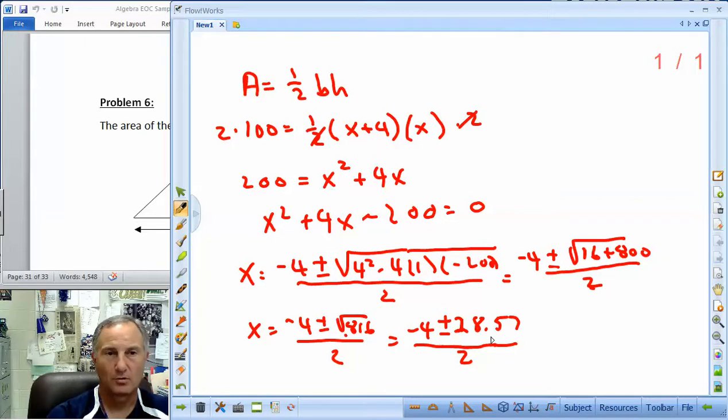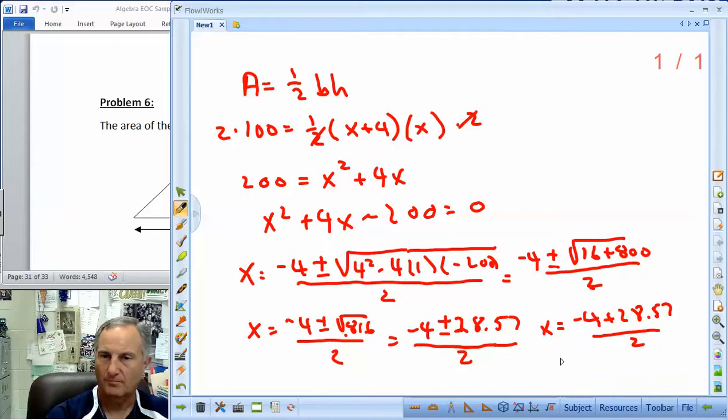All over 2. So I get negative 4 plus or minus the square root of 816 all over 2. Can we take the square root of 816? It's 28.57. It said round so then there's hundreds. So it's going to be 28. So we're going to get negative 4 plus or minus 28.57 all over 2. Now again, we're dealing with the real world situation here. We want to find the length for x. So I've got to be positive. So this negative 4 plus the 28 is going to give me the positive. So negative 4 plus 28.57 all over 2.